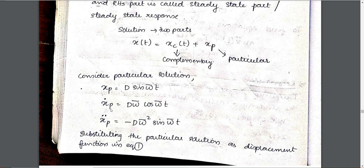Differentiating xp, we get x_dot_p equals d * omega_bar * cos(omega_bar * t). This is the velocity. Differentiating again gives x_double_dot_p, which is the acceleration.